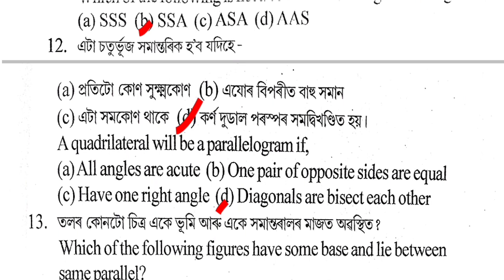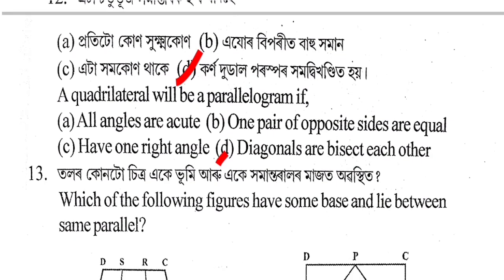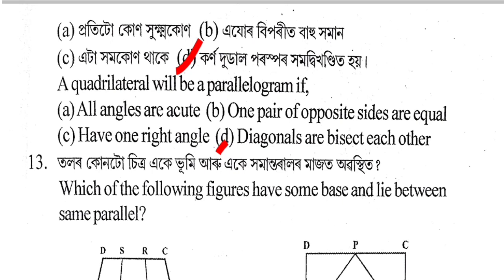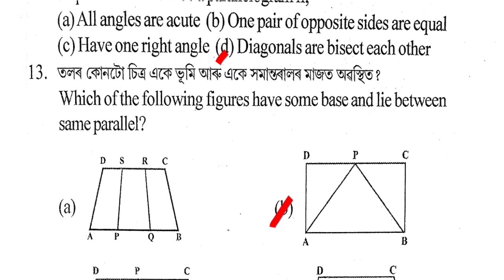Next question: A quadrilateral will be a parallelogram if — all angles are acute, one pair of opposite sides are equal, it has one right angle, or diagonals bisect each other? The correct answer is Option D: diagonals bisect each other.